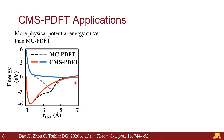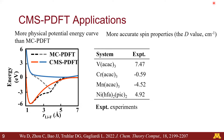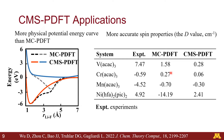We have also done an application on the spin property called the D-value, which measures the transition barrier from one spin state to another and can be compared with experimental values. I'm listing the differences of MC-PDFT and CMS-PDFT values compared with experiment. CMS-PDFT gives very small errors compared to MC-PDFT, and for several systems where MC-PDFT produces a wrong sign of the D-value, CMS-PDFT gives the correct sign with reasonably good accuracy.